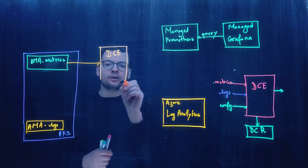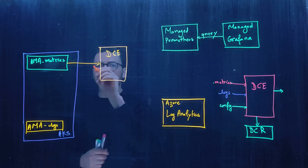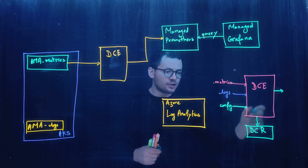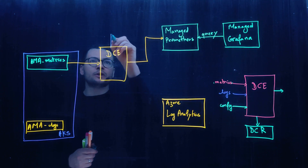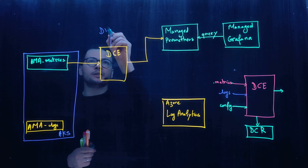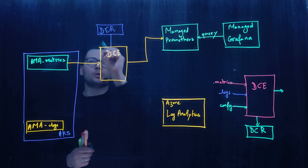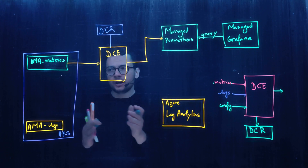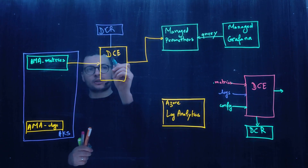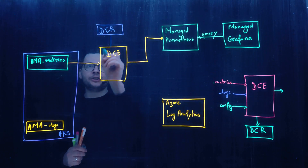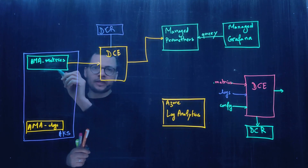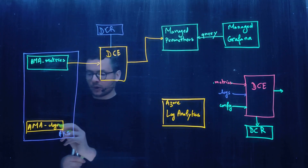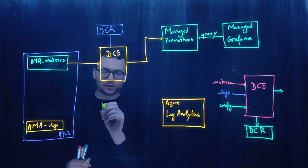The data collection endpoint ingests metrics through the metrics endpoint so they can be sent to Azure Monitor Prometheus. The DCE works with a DCR attached to it that specifies the data collection rule for transformation — for example, filtering specific metrics through the DCR. The Azure Monitor agent first connects to the DCE through the config endpoint to retrieve the DCR, performs data transformation, and then sends the transformed metrics back.